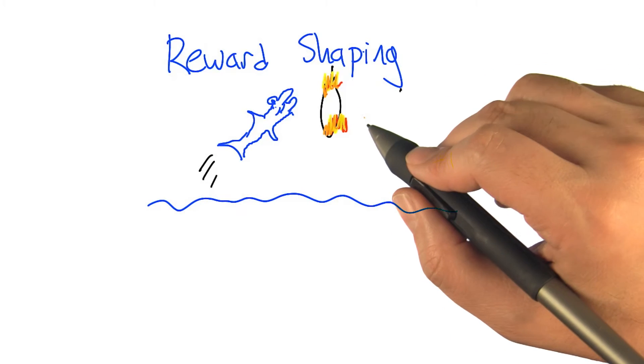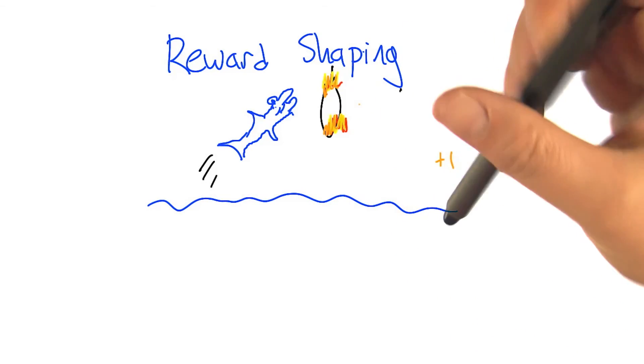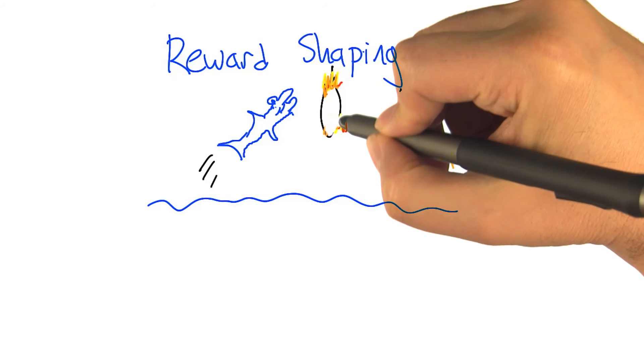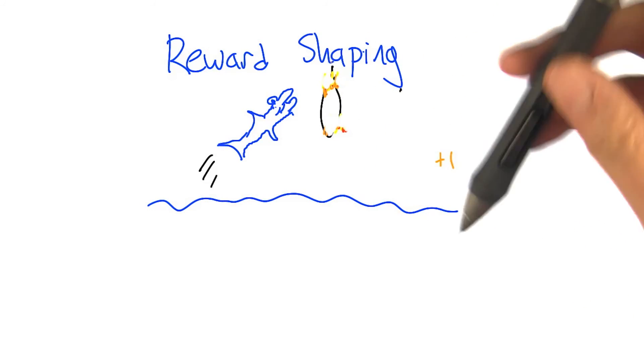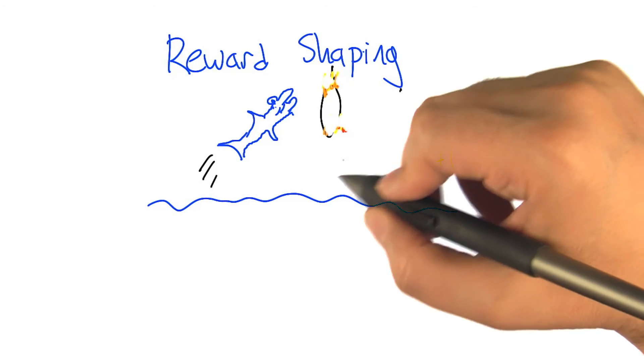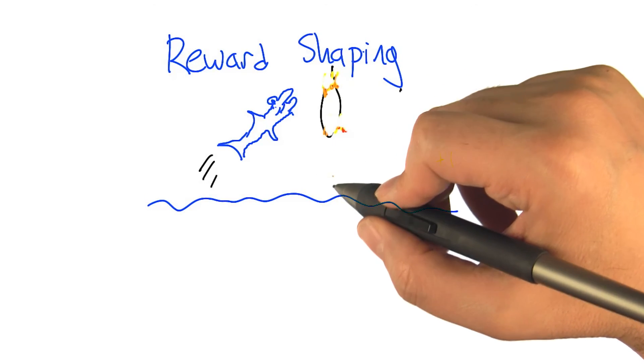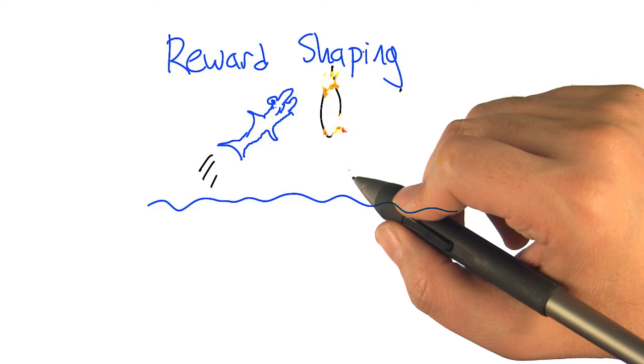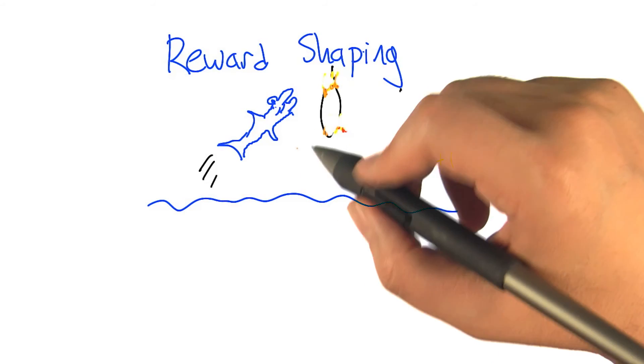I actually don't think I've ever seen a dolphin jump through a flaming hoop, so we might want to extinguish some of that. But anyway, that's not really the point. The point is that it's this series of mini rewards along the route to the big payoff that helps provide the right kind of hints.